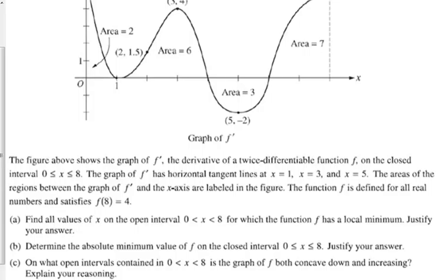Okay, anytime they ask us an absolute minimum or an absolute maximum on a closed interval, we have to check endpoints and critical points. Well, we just identified in part A that the only local minimum was at 6, so we've got to check 0, 6, and 8.